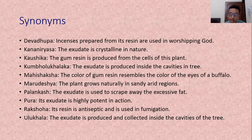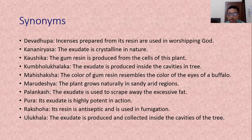Pura means exudate; the exudate is highly potent, so it is known as Pura. Rakshuha means antiseptic; the resin is used as antiseptic and also for fumigation, so it is known as Rakshuha. Ulukhala — as mentioned earlier, the exudate is produced and collected inside the cavity of the tree, so it is known as Ulukhala.